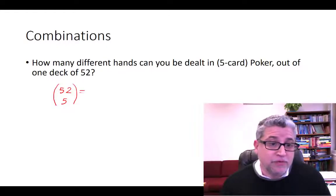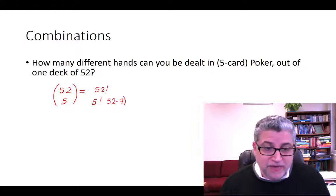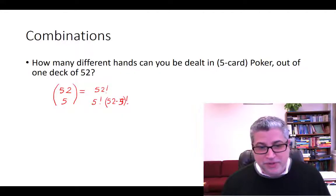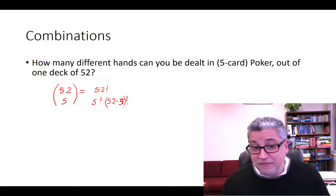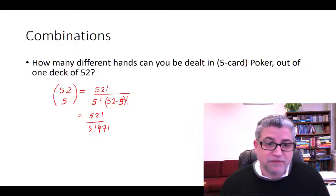The formula for that is 52 factorial over 5 factorial over 52 minus 5 factorial. 52 minus 5 gives us our 47. So 52 over 5 factorial over 47 factorial.